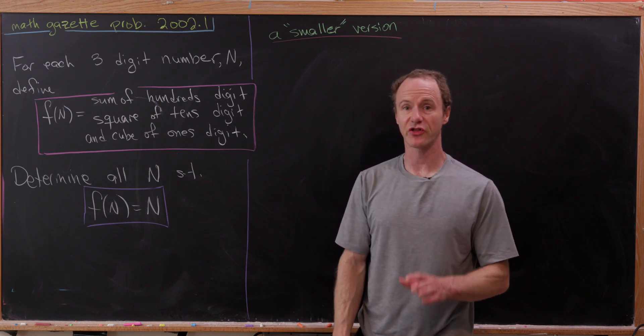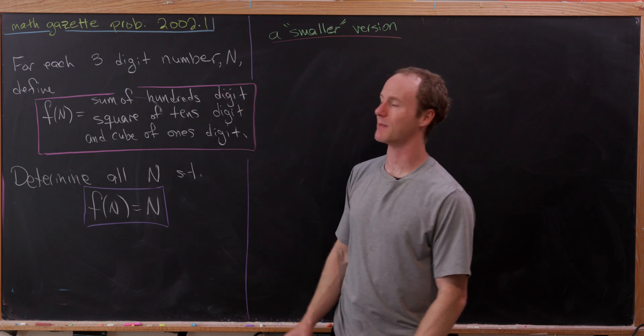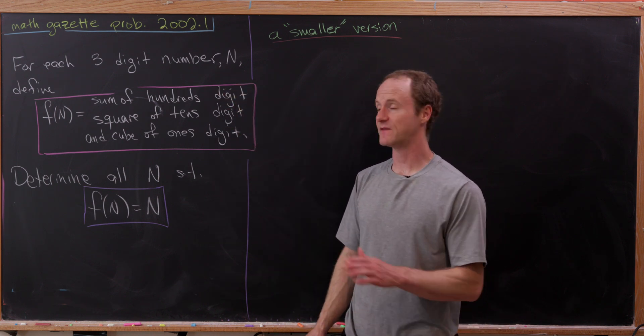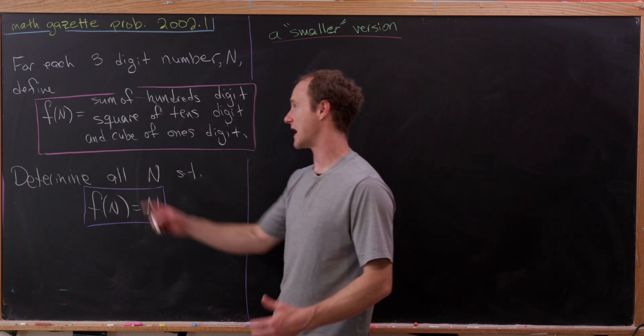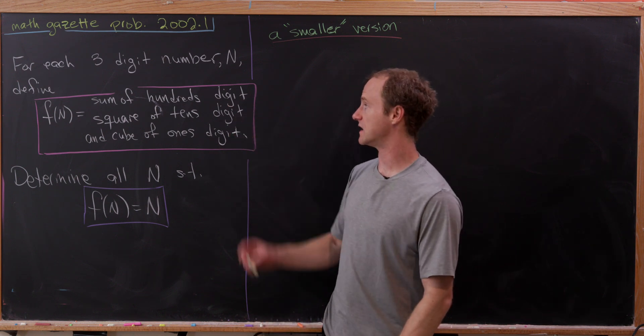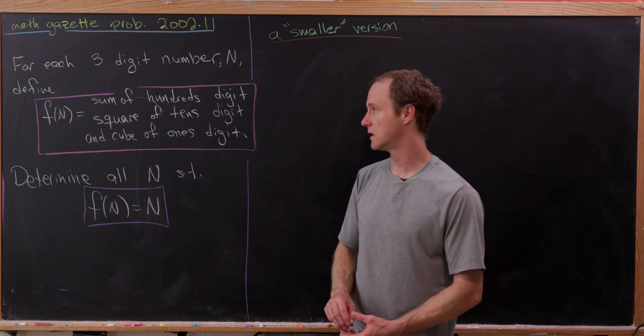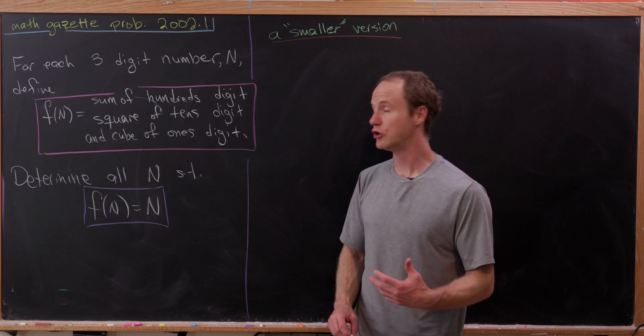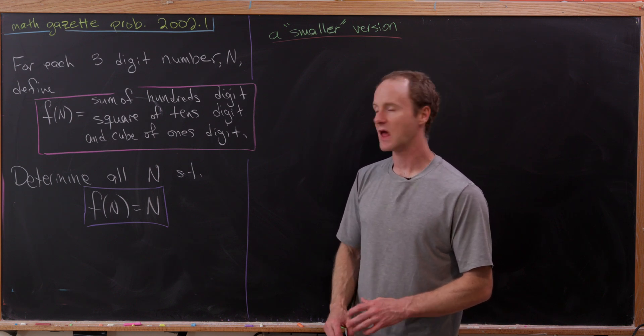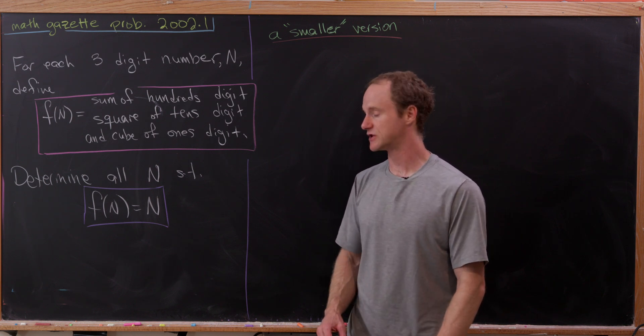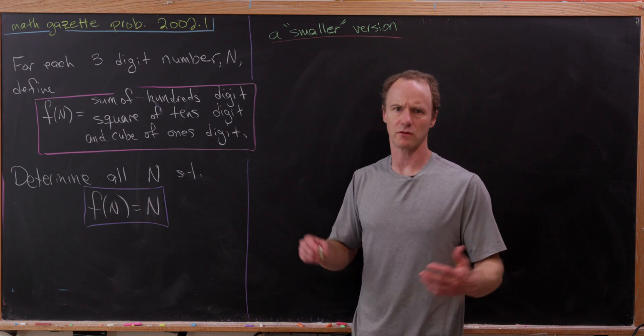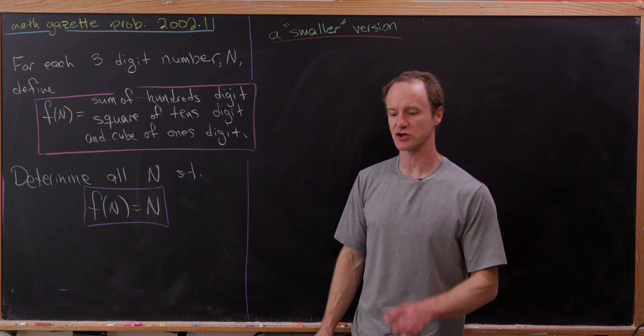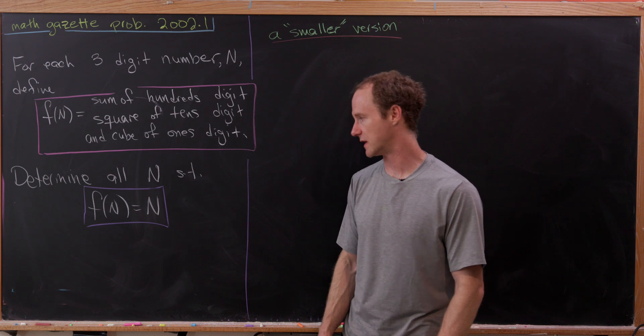For each three-digit number, which we'll denote by capital N, define the function f by f of n is the sum of the hundreds digit of n and the square of the tens digit and the cube of the ones digit. Our goal is to determine all n such that f of n is equal to n.